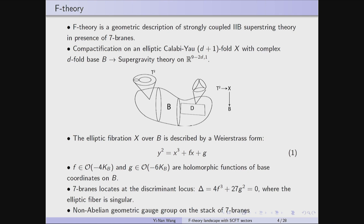I will give a very brief introduction to the basic setup in F-theory. In one sentence, F-theory is a geometric description of strongly coupled type IIB superstring theory in the presence of some seven-brane objects. In the geometric picture, you think about compactification of a 12-dimensional theory on an elliptic Calabi-Yau (d+1)-fold, which acts as a complex d-dimensional base B with 2d real dimensions. In the end, you get a supergravity theory on spacetime R^(9-2d,1).